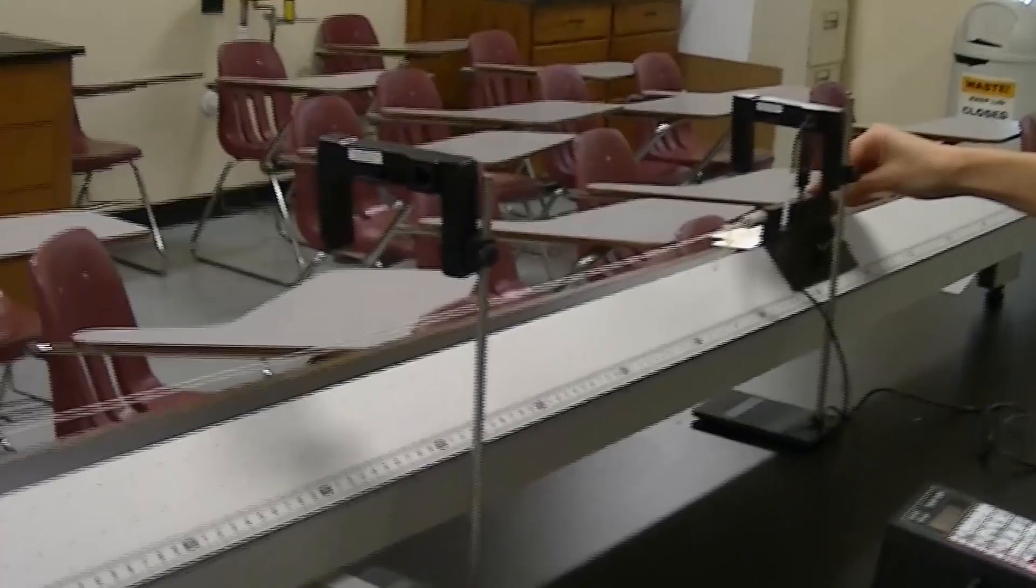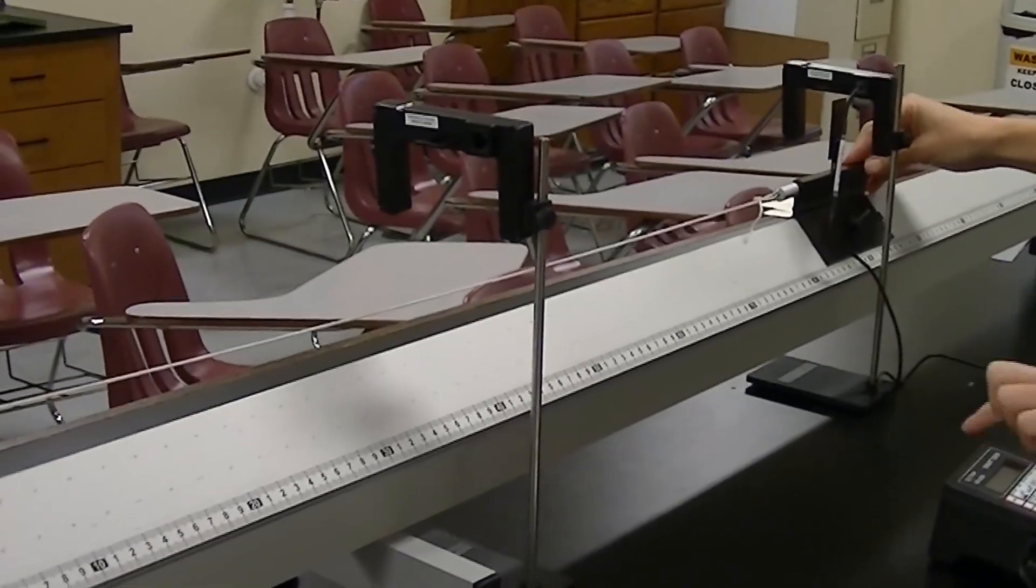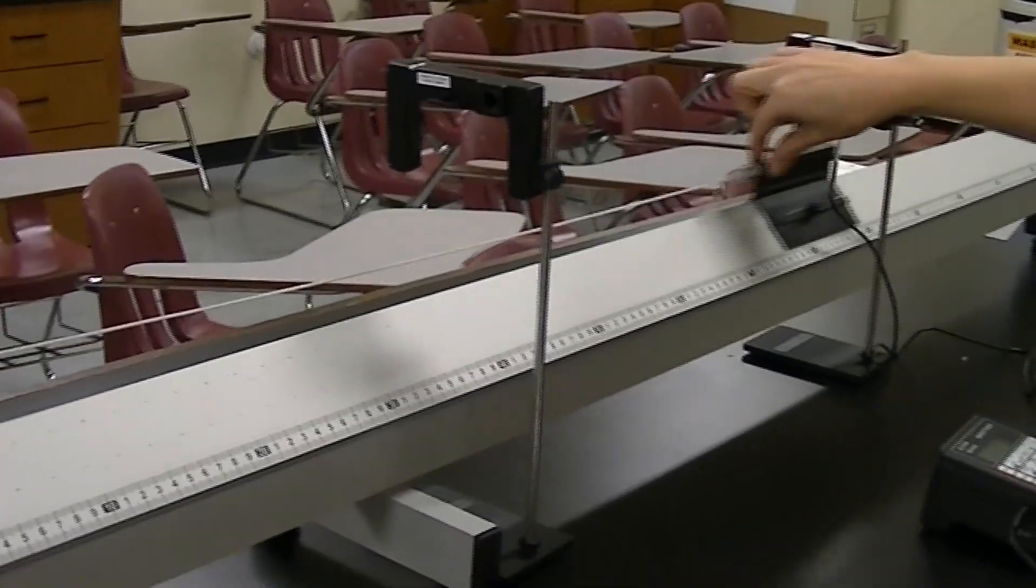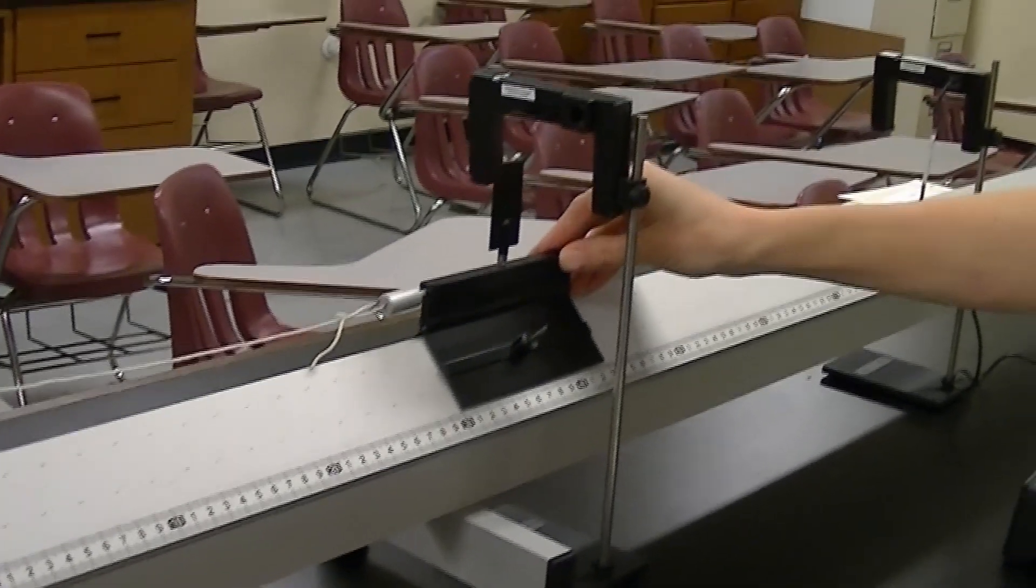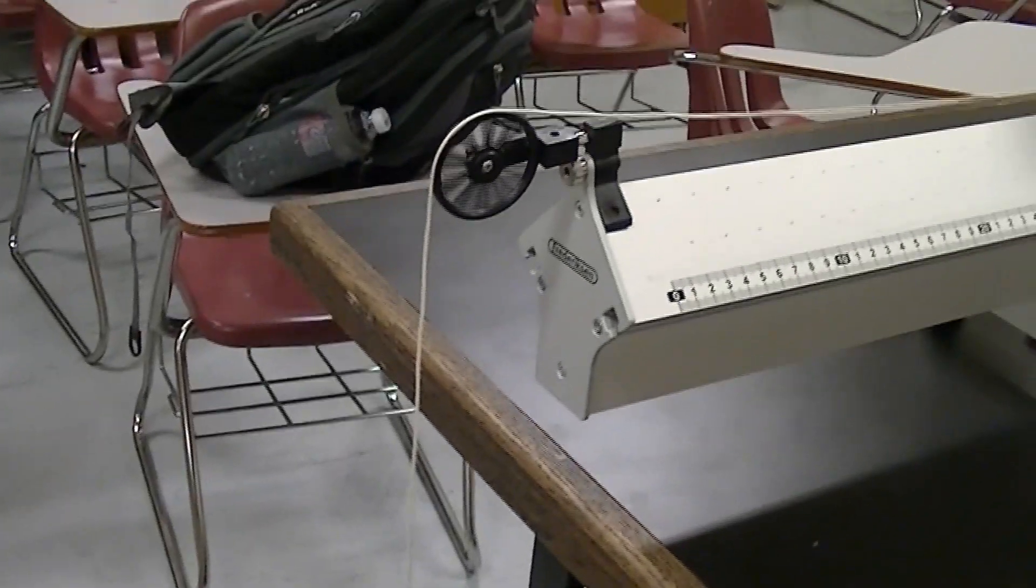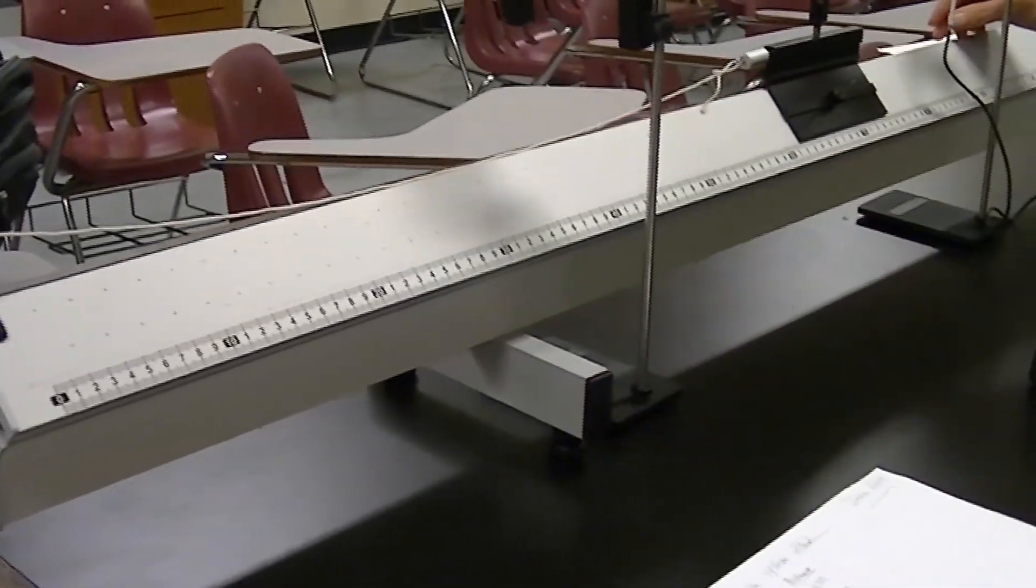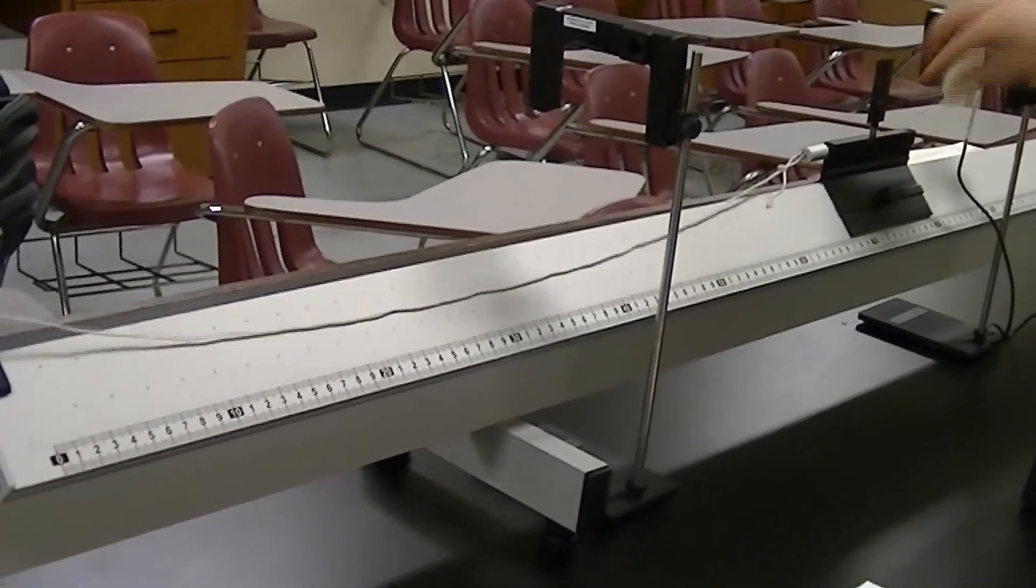When the glider moves through this first gate, it is going to start the timer. As it continues its journey and goes through the second gate, the timer will stop. So that's going to be my T1 for my first trial. I am going to do that same trial with the same hanging mass three times so that I can get an average.